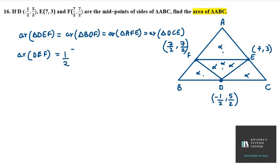So we know the formula which is half times [X1(Y2 minus Y3) plus X2(Y3 minus Y1) plus X3(Y1 minus Y2)]. So we have to use this formula to find area of triangle DEF.